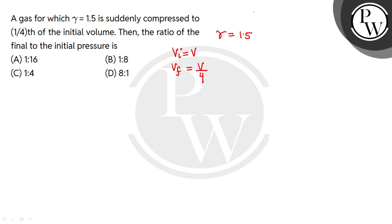We have to find the ratio of the final to the initial pressure. Final pressure divided by initial pressure. This will be the ratio. Now, in the adiabatic process, PV^gamma equals constant.